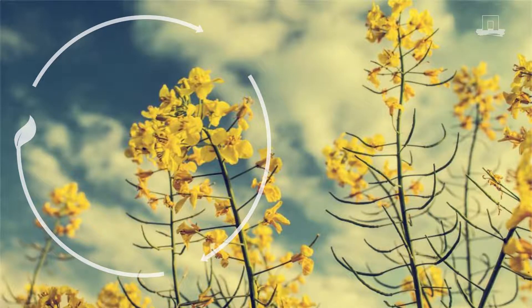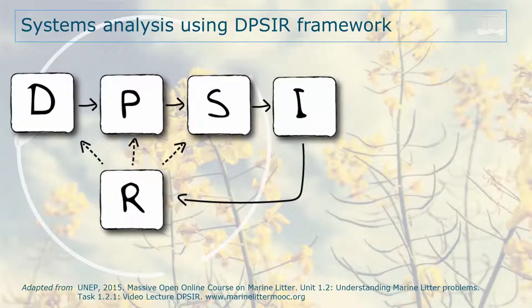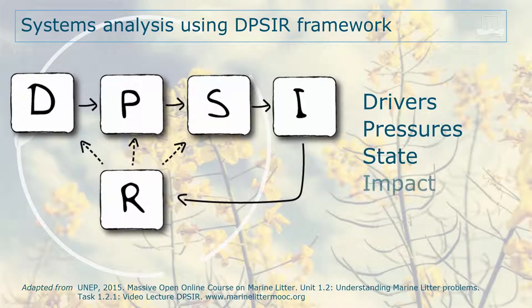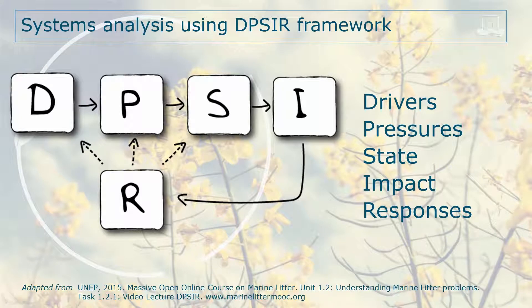DPSIR stands for Drivers, Pressures, States, Impacts, and Responses. The DPSIR framework is a tool for describing and analyzing environmental problems in a consistent and transparent way. It helps you to better structure environmental problems and answer questions such as: What causes pollution problems? And what are the adverse effects?